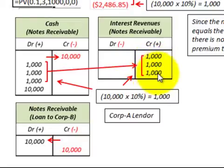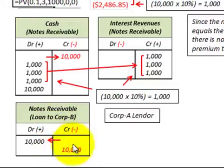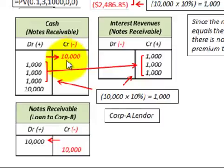On the income statement, we recognize interest revenue for those cash interest payments received — three payments of $1,000 for a total of $3,000. When the note becomes due, we record the cash receipt of $10,000 and remove the notes receivable by crediting Notes Receivable for $10,000. This is how we handle a note issued at its face value where the stated rate of interest equals the effective market rate of interest.